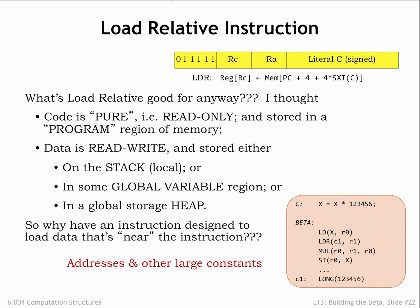The use case for LDR is accessing large constants that have to be stored in main memory because they are too large to fit into the 16-bit literal field of an instruction. In the example shown here, the compiled code needs to load the constant 123456, so it uses an LDR instruction that refers to a nearby location, C1, that has been initialized with the required value.